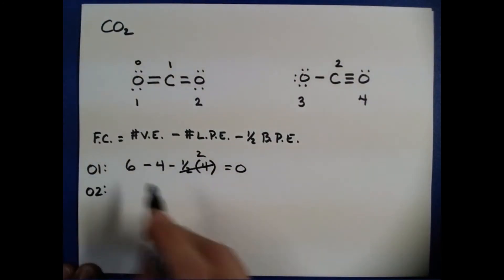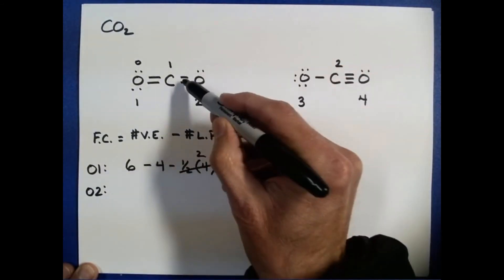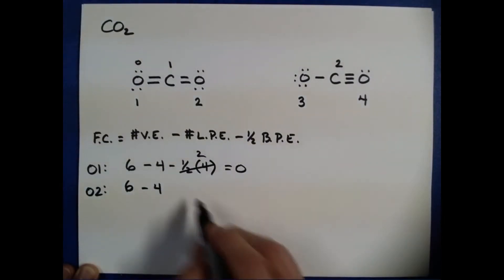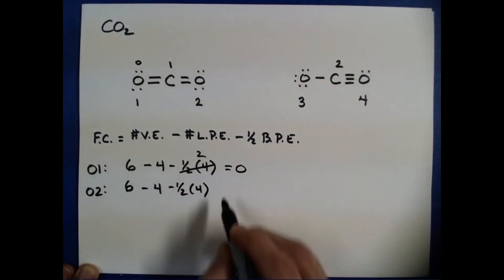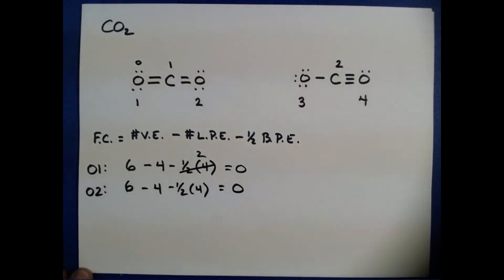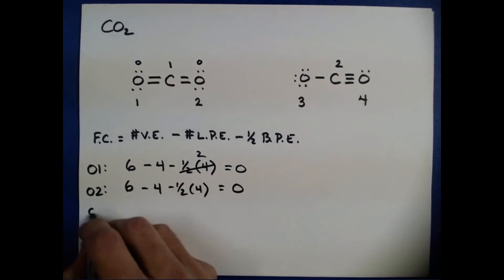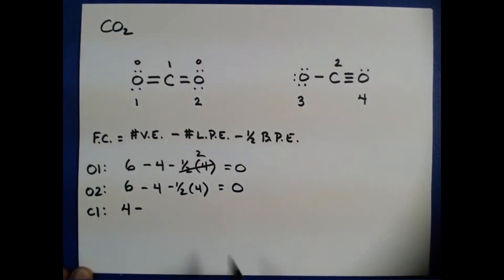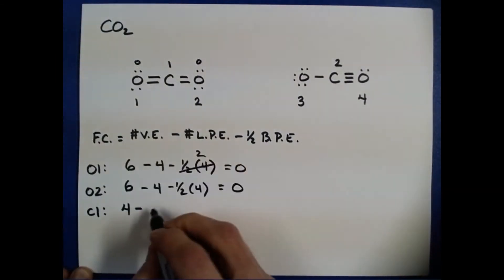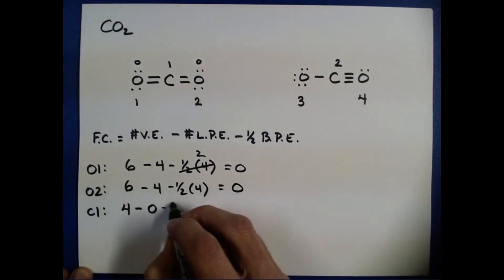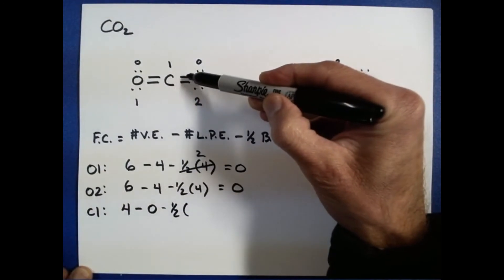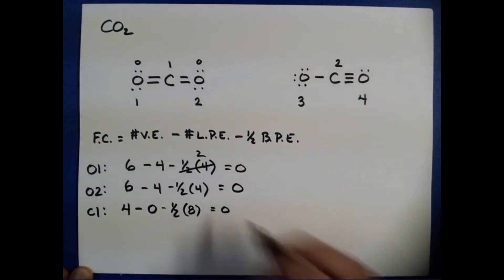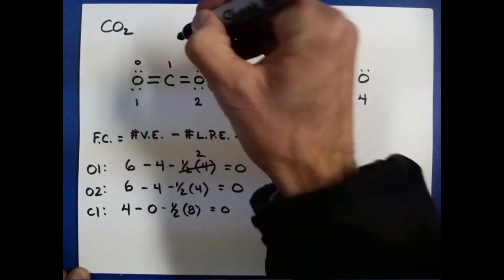Oxygen two is actually identical — it has the same number of lone pair electrons and the same number of bond pair electrons. So we calculate six valence electrons minus four lone pair electrons minus half of four bond pair electrons, giving a formal charge of zero. Now for carbon one: all carbon atoms have four valence electrons, minus zero lone pair electrons, minus half of eight bond pair electrons. Half of eight is four, and that gives carbon one a formal charge of zero.